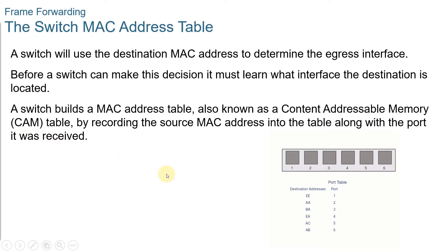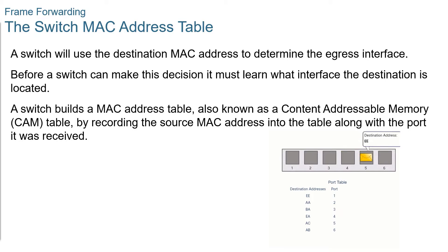LAN switches determine how to handle incoming data by maintaining the MAC address table. A switch populates the MAC address table by recording the source MAC address for each device connected to each port. The switch references the information in the MAC address table to send frames destined for a specific device out of the port which has been assigned to that device.